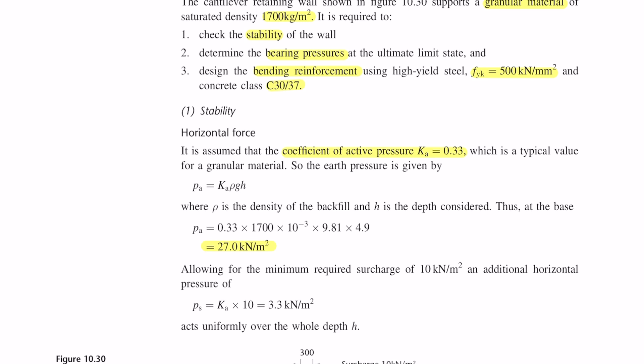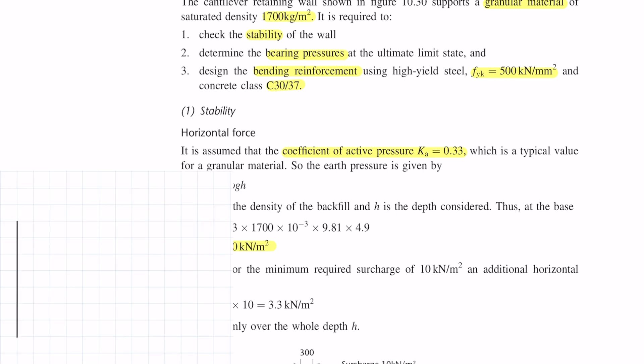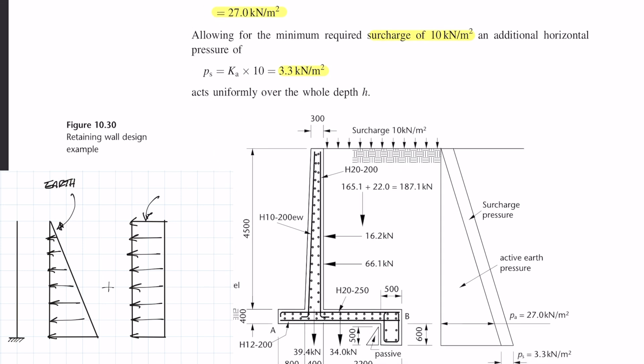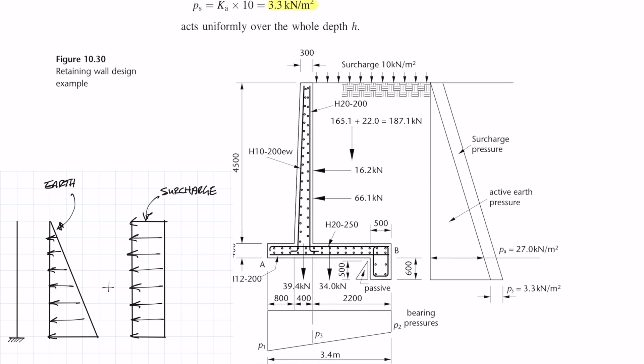To work out the pressure behind the wall due to the soil we use the equation Ka*rho*g*h, where Ka is the active pressure, rho is the density of the granular soil, g is gravity, and h is the height. Plug the numbers into the equation and you get 27 kN per m². Lateral earth pressure is distributed onto the wall as a triangle. Next we need to calculate the lateral force due to the surcharge which in this case is 10 kN per m². You multiply 10 by the coefficient of active pressure to get 3.3 kN per m². This acts uniformly over the wall so essentially it's a rectangle.